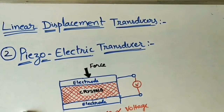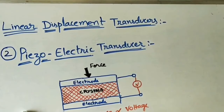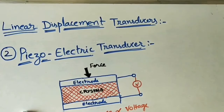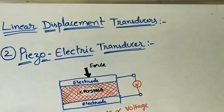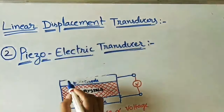From this output voltage we can find the magnitude of the force we are applying on the crystals. That is the first case. In the next case, I am taking the reverse order — instead of applying force, I am applying voltage as input.